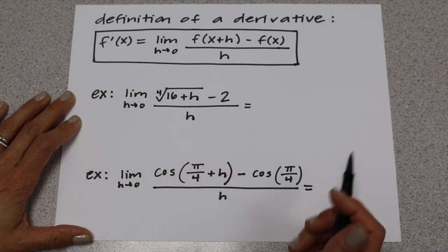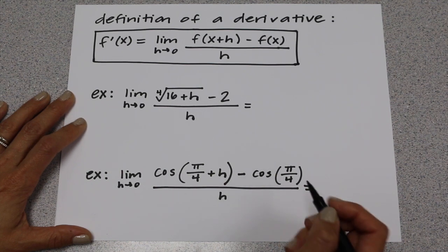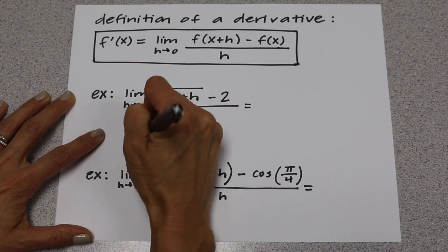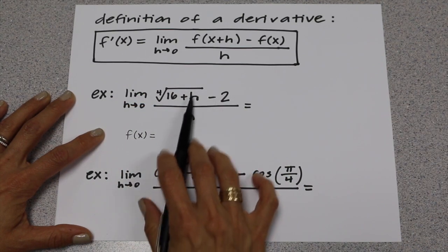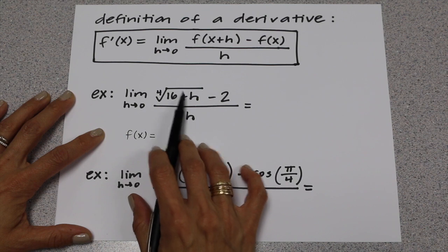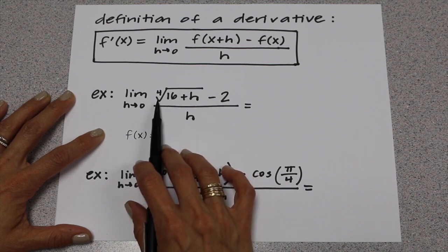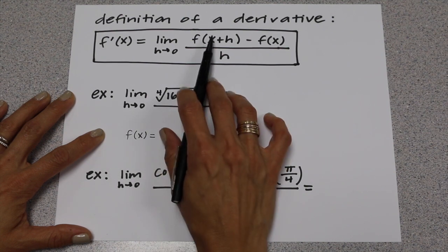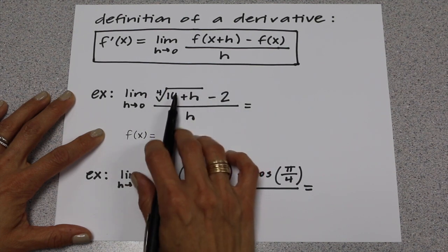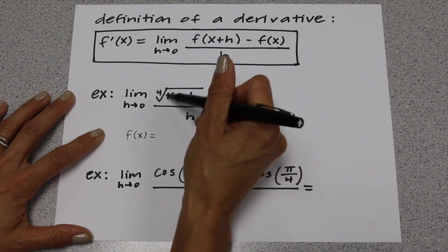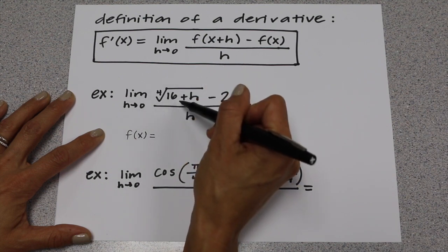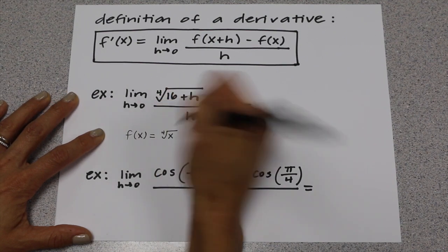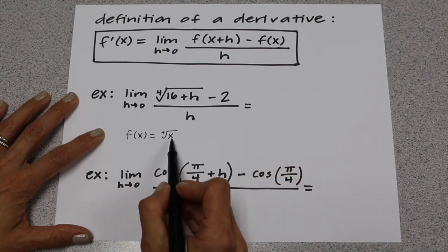When doing these problems, the first thing you want to do is recognize what f of x is. In this problem, we look at the numerator on the left side, because x plus h is being plugged into the function. So x plus h is plugged into f. If you look at this and try to figure out what the function would be, the function is going to be the 4th root of x. That's f.